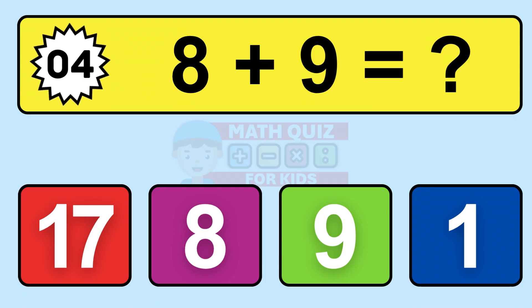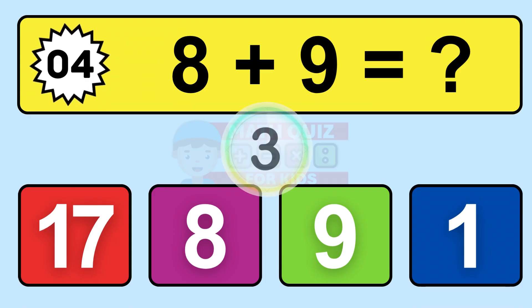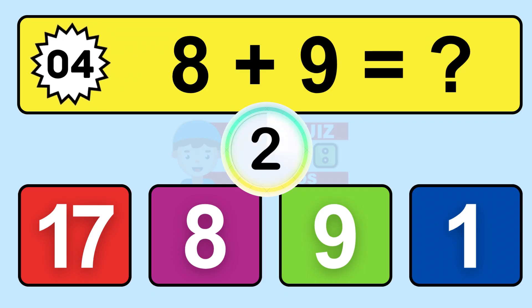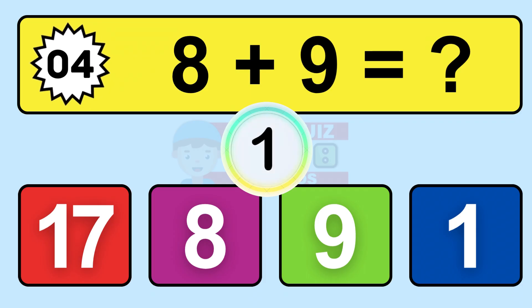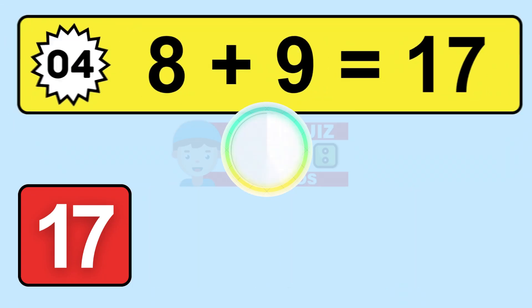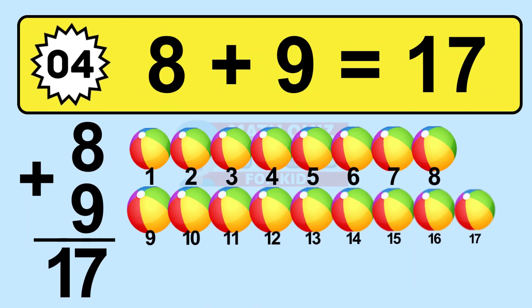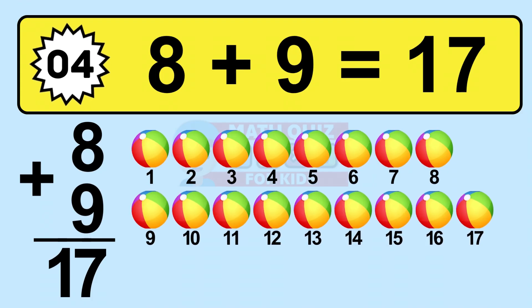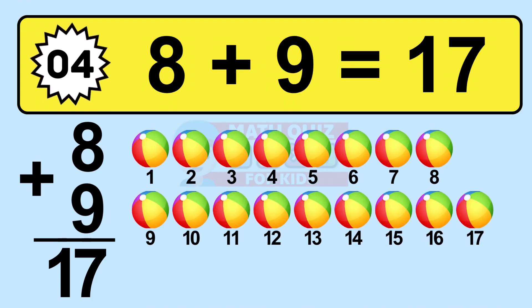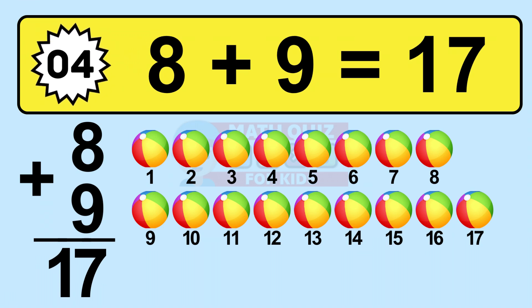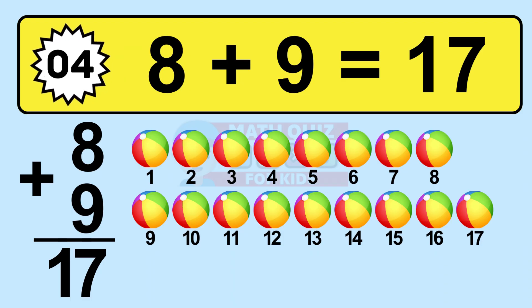Question four: 8 plus 9 equals what? So the answer is 8 plus 9 is 17. Let's count it. 1, 2, 3, 4, 5, 6, 7, 8, 9, 10, 11, 12, 13, 14, 15, 16, 17.